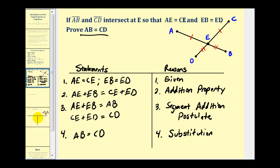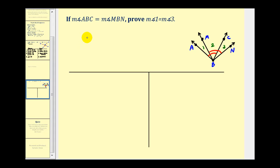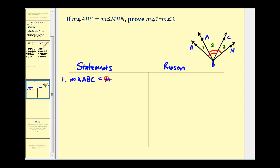Let's take a look at another example that involves angles. Here we're given that the measure of angle ABC is equal to the measure of angle MBN. We want to prove the measure of angle one is equal to the measure of angle three. We'll list our statements and reasons. First, we state the given: the measure of angle ABC equals the measure of angle MBN. The measure of angle ABC equals the measure of angle one plus the measure of angle two, and the measure of angle MBN equals the measure of angle two plus the measure of angle three — from the angle addition property.